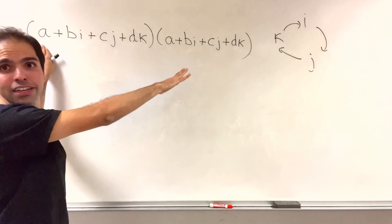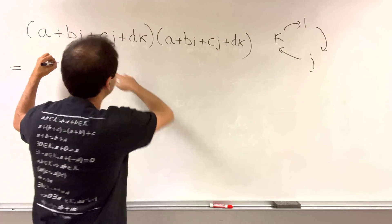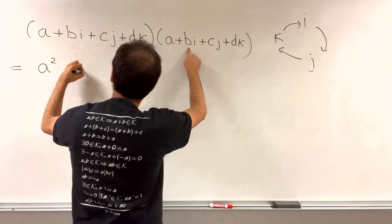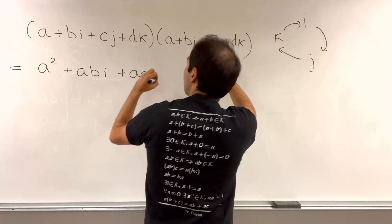So the first line is not too bad, because you multiply everything by a. So it's a squared plus abi plus acj plus adk.